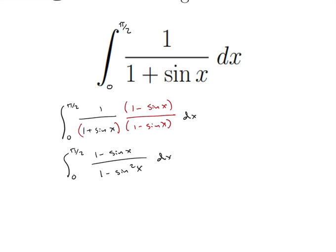So the bottom now, remember from Pythagorean Theorem, we have cosine squared of x plus sine squared of x is equal to 1. So we can very clearly see that 1 minus sine squared of x must then be the same as just cosine squared of x.